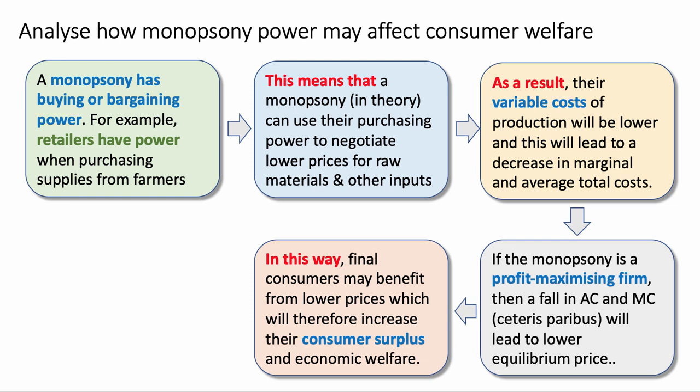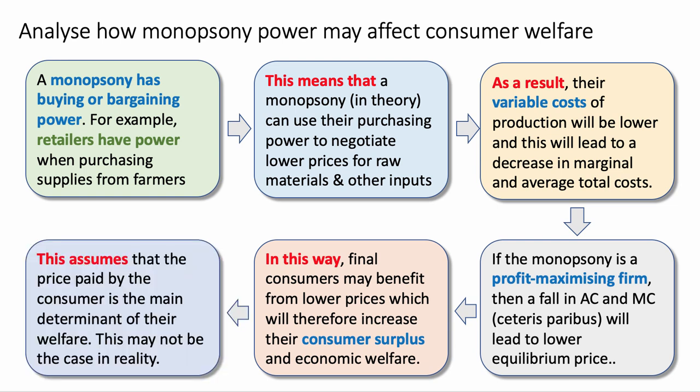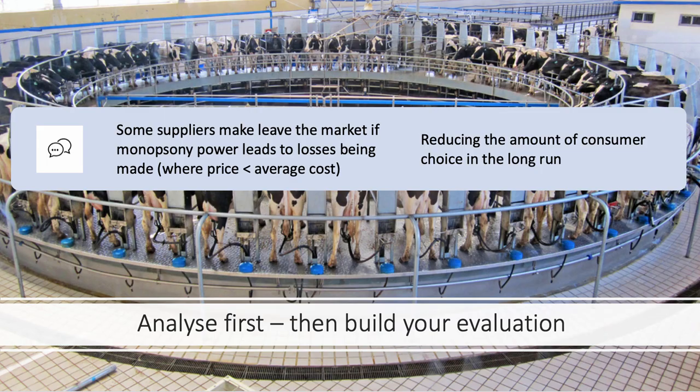You could add an assumption: this assumes that the price paid by the consumer is the main determinant of their welfare, which may not be the case for all people. A good chain of reasoning could be supported by a diagram — for example, showing a falling cost as an outward shift of supply as the bargaining power of the firm brings down their cost of production. Analyze first, then build your evaluation.